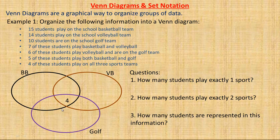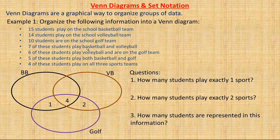Basketball and golf overlap is this area here. I already have four people in there, and there are supposed to be five total, so I only need to put a one there. Six play on volleyball and golf — that region already has four, so I put a two there to make six total. Seven play on basketball and volleyball — that overlap already has four, so I only need to put a three there, giving seven people on both of those teams.